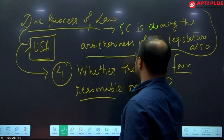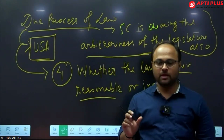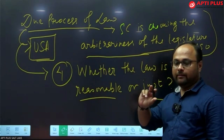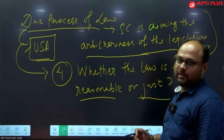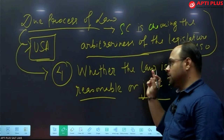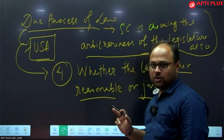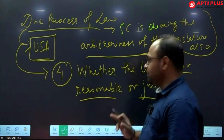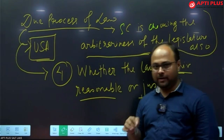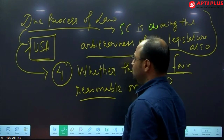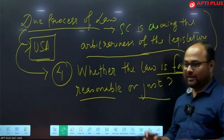In the Maneka Gandhi case, a broader interpretation of Article 21 was made by the Supreme Court. It was declared that in India, the procedure established by law also includes due process of law, which means from 1978 onwards, the Supreme Court went into checking the intention of the law as well — whether the law through which personal life or liberty has been violated is fair, reasonable, or just. Due process of law also follows the principle of natural justice.